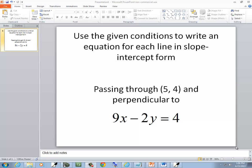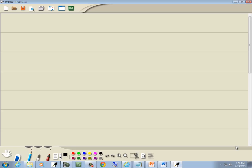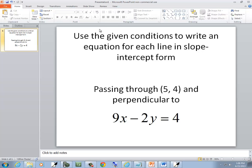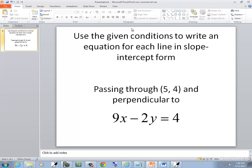Let's take a look at this problem. We're going to use the given conditions to write an equation for the line in slope-intercept form. It passes through the point (5, 4) and is perpendicular to 9x - 2y = 4.